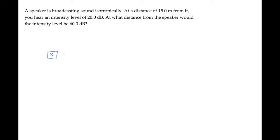The speaker in this problem is broadcasting isotropically, which means sound is transmitted equally in all directions. We're told that at a distance d1 of 15 meters from the speaker, the intensity level beta1 is 20 dB.